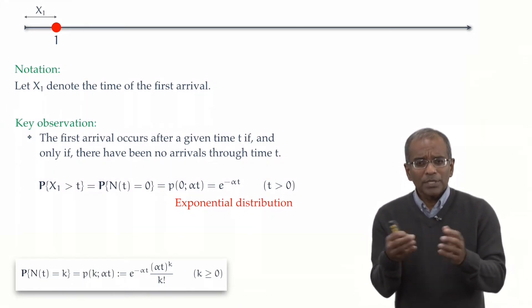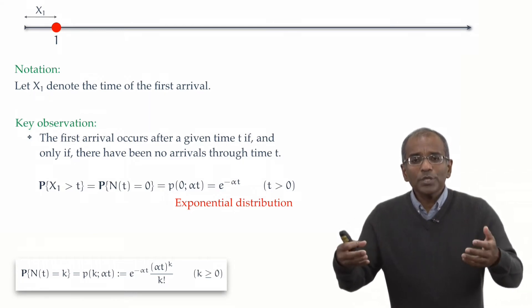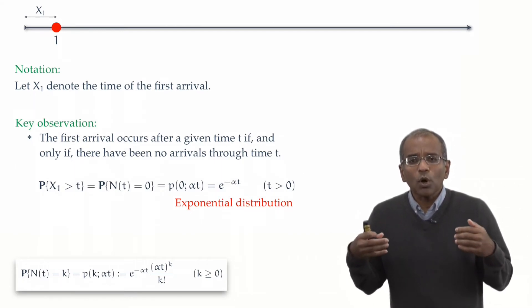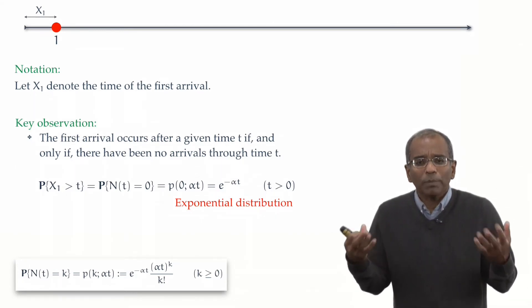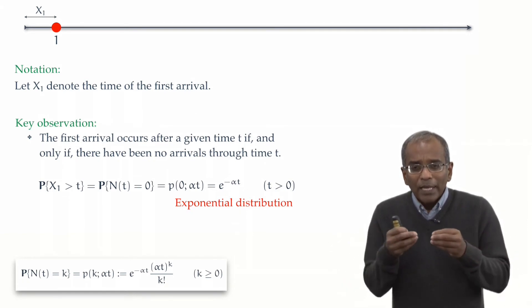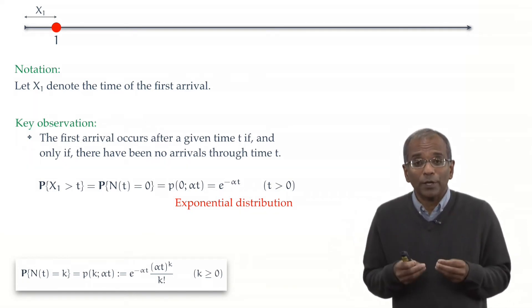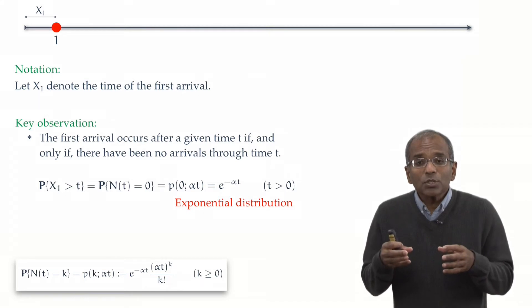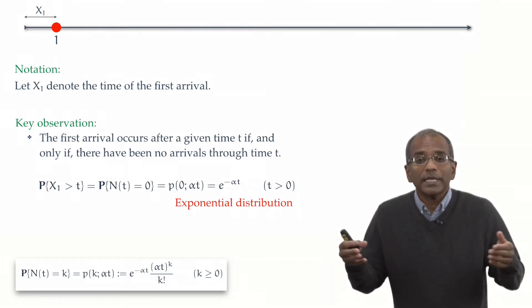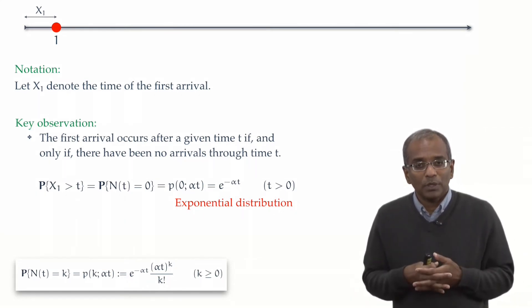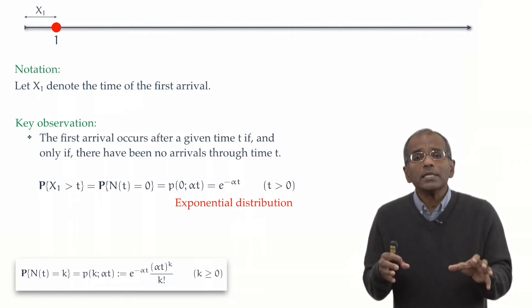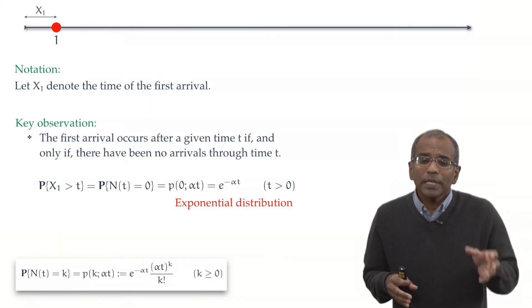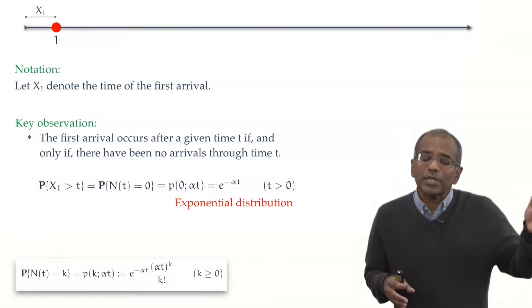Now, notice how easily and simply we've computed a probability involving what on the surface appears to be quite a complicated object. X₁ is clearly a chance variable, but it is not discrete anymore. In fact, it takes a continuum of values. No matter, we can relate its distribution to that of the Poisson process N(t).